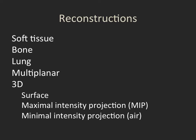There are a variety of different 3D reconstructions depending on what information is sought. We can do surface reconstructions of the skin, bones, or organs. We can do maximal intensity projections, or MIPs, frequently used for vascular structures containing contrast. And we can do minimal intensity projections when looking at air within structures such as the trachea, bronchi, or colon.